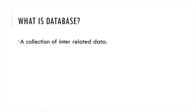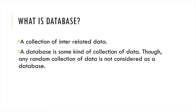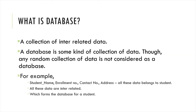A collection of interrelated data is called a database. Any random collection of data is not considered a database — it must be interrelated. For example, student name, enrollment number, contact number, and address all belong to a student and are interrelated, forming a student database.